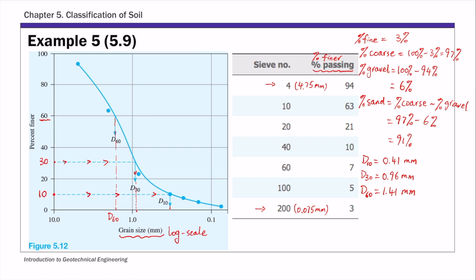Once you have these d values, you can calculate these two coefficients. The first one, coefficient of uniformity, defined as d60 over d10. If you plug in the values we just read from the curve, this is about 3.44. The other coefficient is coefficient of gradation, Cc, defined as d30 squared over d60 times d10. If you plug in those numbers, this is 1.59. So that's the Cu and Cc value.